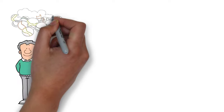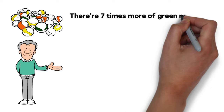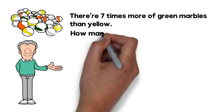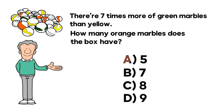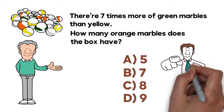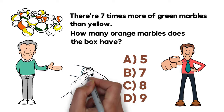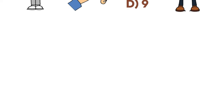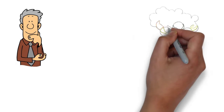Here's a cool problem that's easy to understand but tricky to solve. A box has 15 marbles of green, yellow, and orange colors. There are seven times more green marbles than yellow. How many orange marbles are in the box? Choices: A: 5, B: 7, C: 8, D: 9. Give yourself 10 to 15 seconds.